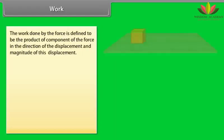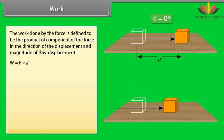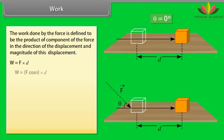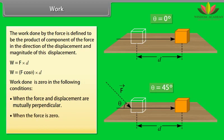Work. The work done by the force is defined to be the product of component of the force in the direction of the displacement and magnitude of this displacement. W is equal to F into D. W is equal to F cos theta into D. Work done is 0 in the following conditions: when the force and displacement are mutually perpendicular, when the force is 0, when the displacement is 0.